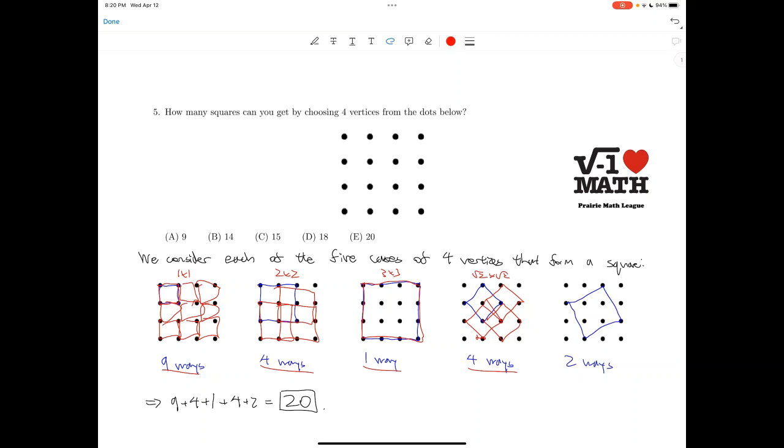Then finally, we have this thing here, which is kind of angled at a very strange angle. This requires a bit of insight to actually figure out what this is. This is square root of 5 by square root of 5, and there are 2 ways because we can also have this. Now summing these, we get the answer of 20, which is option choice E.